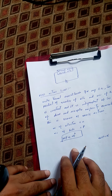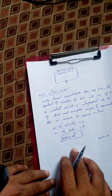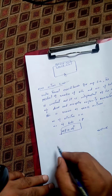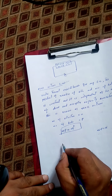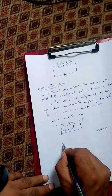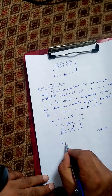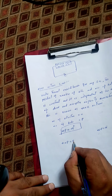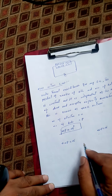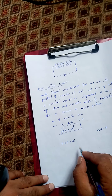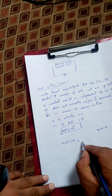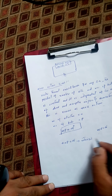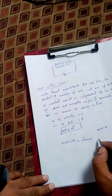Now here we will see why this is true. As we know, the electron and hole concentration in an intrinsic semiconductor: the number of electrons in the conduction band will be equal to the number of holes in the valence band, which is equal to ni, where ni is the intrinsic carrier concentration.